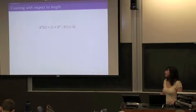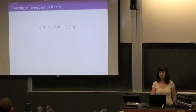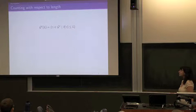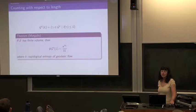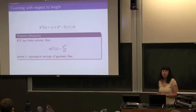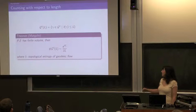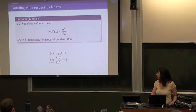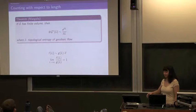First, counting with respect to length. GC(L) is going to denote the set of closed geodesics with length at most L. There's this famous theorem of Margulis that if S has finite volume and is negatively curved — not necessarily hyperbolic — then the size of GC(L) grows asymptotically like e^(δL) / (δL), where δ is the topological entropy of the geodesic flow. The tilde just means asymptotic growth.